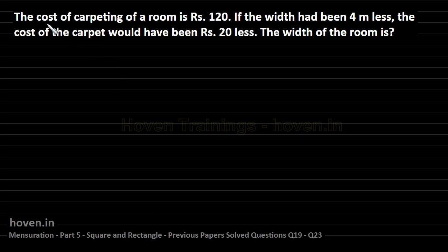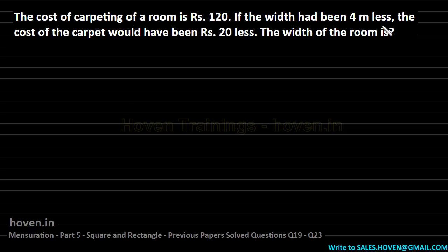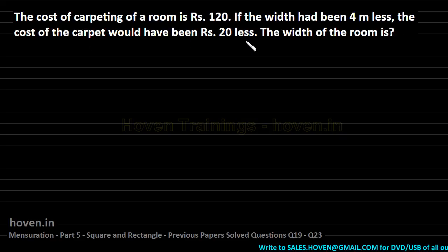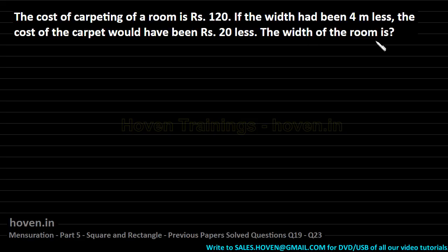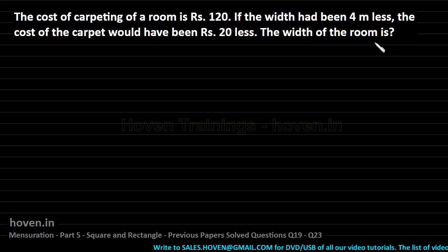The cost of carpeting a room is Rs 120. If the width had been 4 meters less, the cost of the carpet would have been Rs 20 less. We have to find out the width of the room.